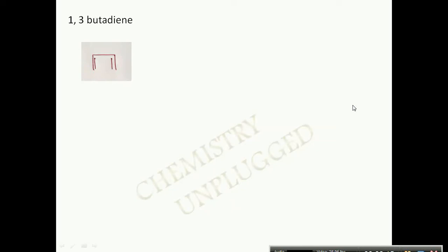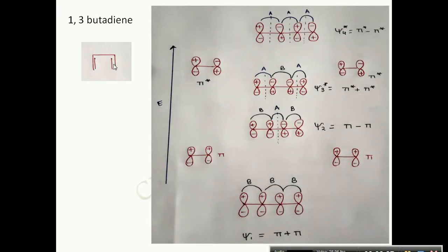The next example is 1,3-butadiene. In 1,3-butadiene we have two pi bonds, meaning four p orbitals overlap to form four pi orbitals. Four atomic orbitals combine linearly to form four molecular orbitals. We can also consider these four molecular orbitals as formed by the linear combination of two molecular orbitals of ethylene.